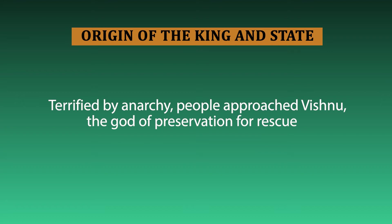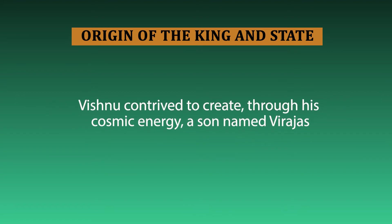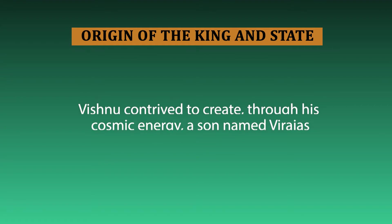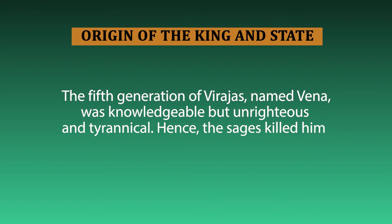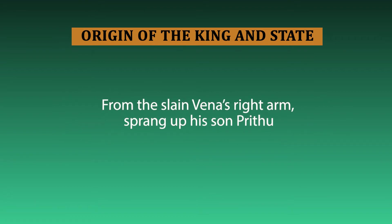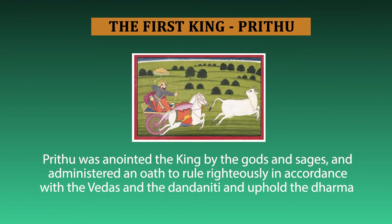This is the origin of the state. Terrified, people approached Vishnu, the god of preservation. Vishnu, through his cosmic energy, created a son named Virajas. Virajas and his four subsequent generations were not inclined to rule — they were inclined to lead a life of renunciation. The fifth generation of Virajas named Vena was knowledgeable but tyrannical and unrighteous. Therefore, the rishis and sages killed him. From the slain Vena's right arm sprang Prithu, the king. Prithu was the first king, appointed by the sages and administered an oath to rule righteously according to the Vedas and dharma to ensure peace and order.